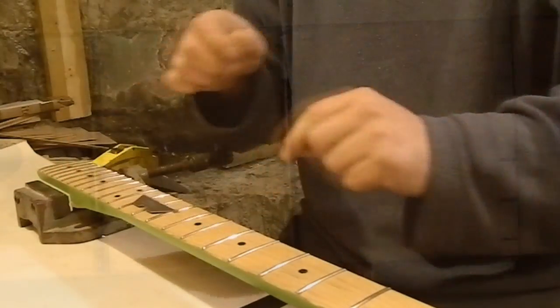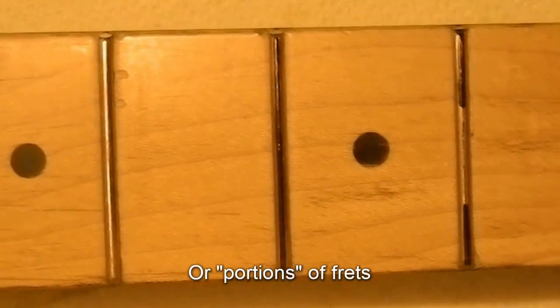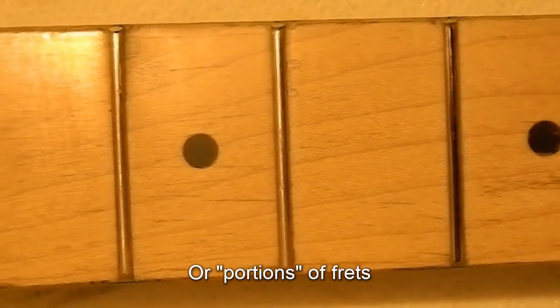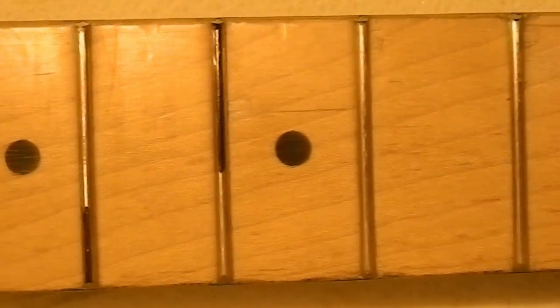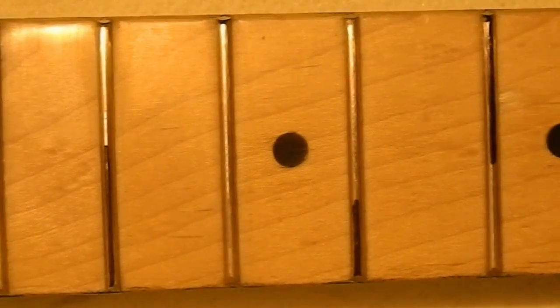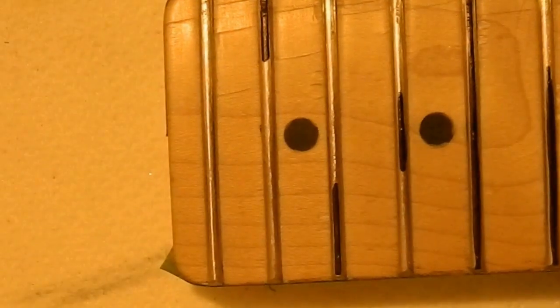This is the situation with the neck once I've marked up all the frets that I've found to be high. If it had just been a couple of frets, I would address them first before leveling the entire fretboard, but because there's so much here, I think the best thing to do is just get the sanding beam out and level the entire board.